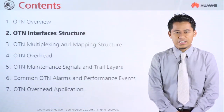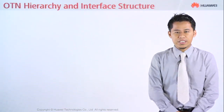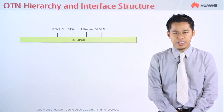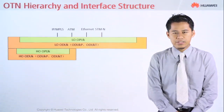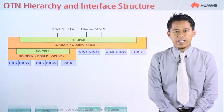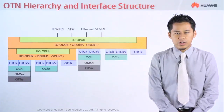The first topic is the OTN hierarchy interface structure. It starts with client services, which go through a mapping and encapsulation process to become the OPUk level. If it is higher order, they jump directly to become the OPUk layer, and lastly become the OCh layer. Throughout this structure, you will see a lot of mapping and encapsulation processes.